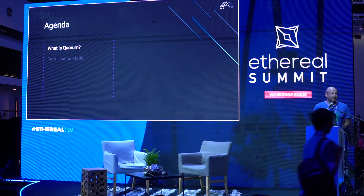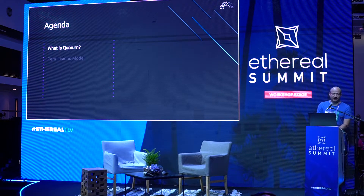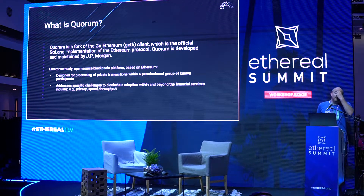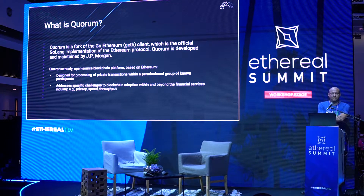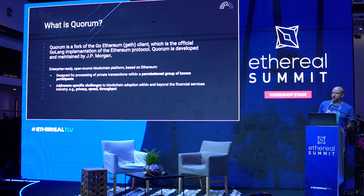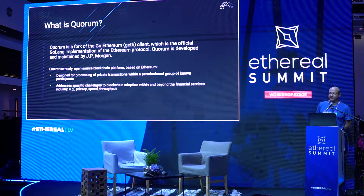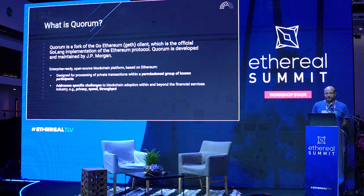The agenda is pretty straightforward. I'm going to cover what Quorum is and explain how we're using it at JP Morgan, and then we'll talk about the permissions models we are introducing into the product. Quorum is a fork of Go Ethereum as a main client for the Ethereum protocol. We took the protocol and the client, forked it, and added features that are really more important in the enterprise context and not really that useful in a public context.